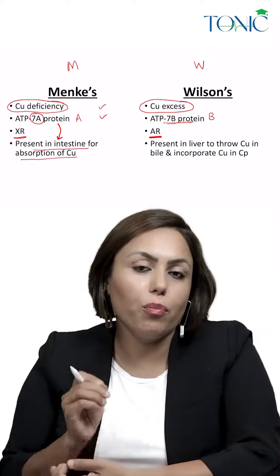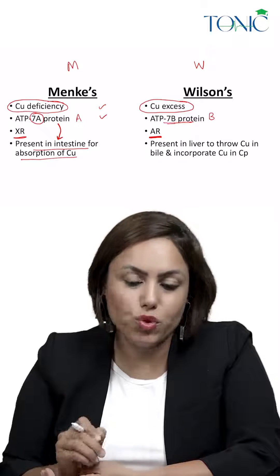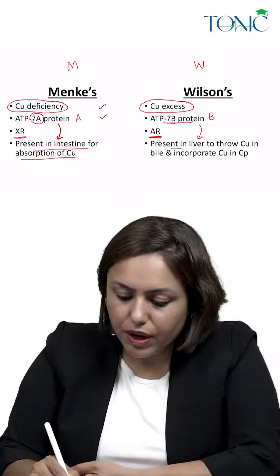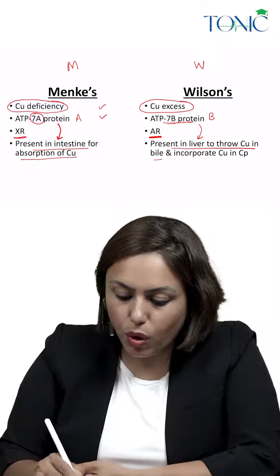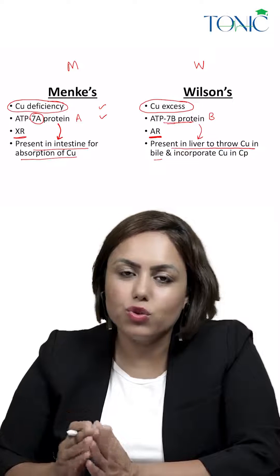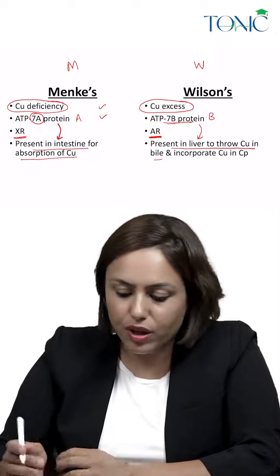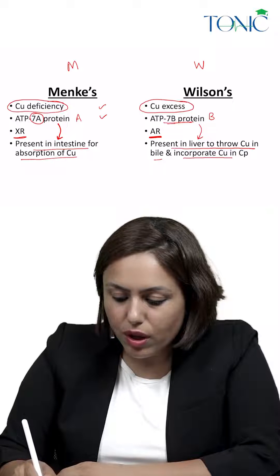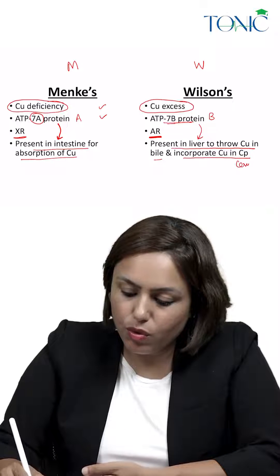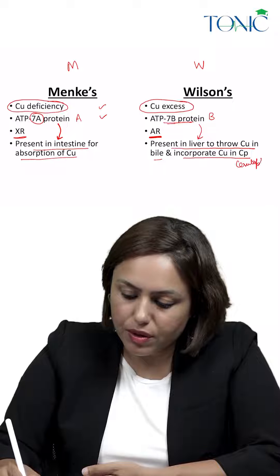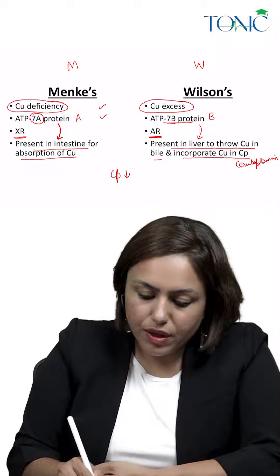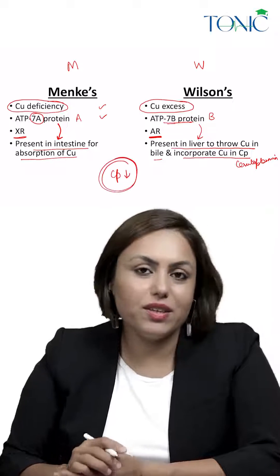In Menkes, the defective protein is present in the intestine for copper absorption, so copper is not absorbed. In Wilson's, the defective protein is present in the liver to excrete copper into bile, so copper is not excreted and accumulates in the body. This protein also helps incorporate copper into ceruloplasmin, so ceruloplasmin is decreased in both diseases.